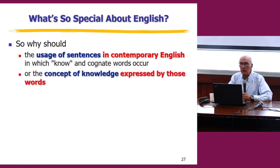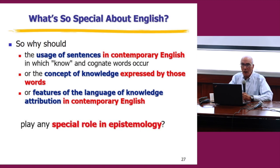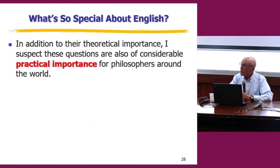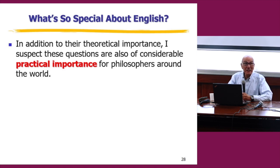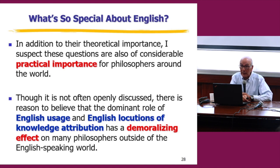Let's think about it for a second. Contemporary English is one of approximately 6,000 extant languages spoken around the world. It's the native language of less than 6% of the world's population. And when Western epistemology emerged in ancient Greece, English didn't even exist. So why should the usage of sentences in contemporary English in which the word 'know' and cognate words occur — or the concept of knowledge expressed by those words, or features of the language of knowledge attribution in contemporary English — why should these things play any special role in epistemology?